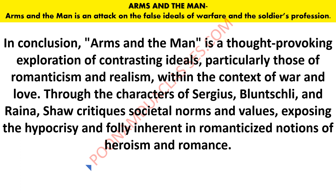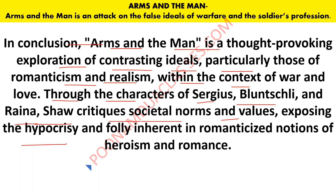In conclusion, Arms and the Man is a thought-provoking exploration of contrasting ideals — particularly Romanticism and Realism — within the context of war and love. Through characters like Sergius, Bluntschli, and Raina, Shaw criticizes societal norms and values, exposing the hypocrisy and follies inherent in romanticized notions of heroism. The play serves as a satirical commentary on the complexities of human relationships and the absurdity of war.